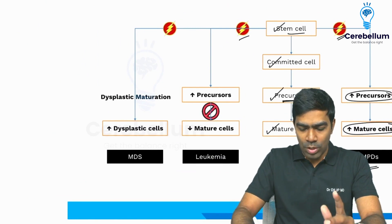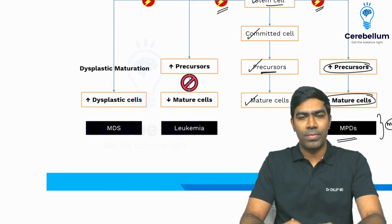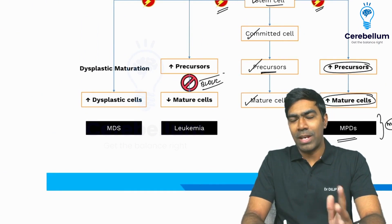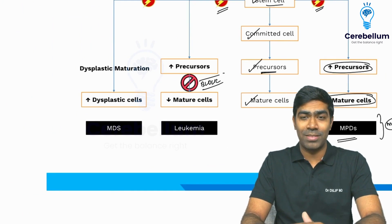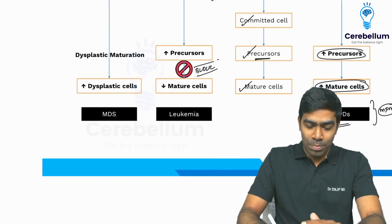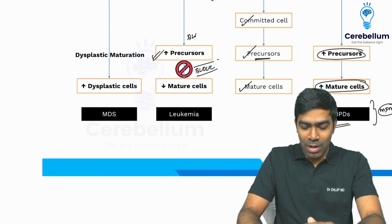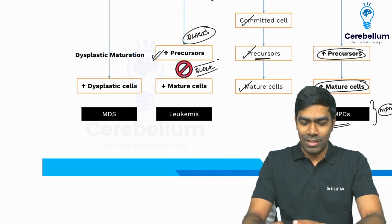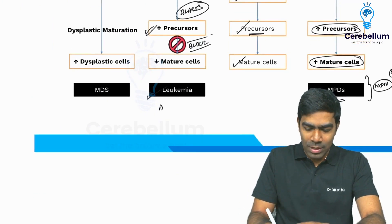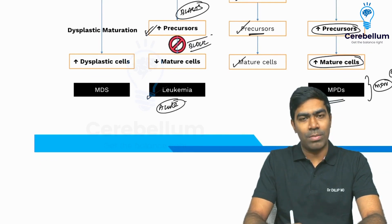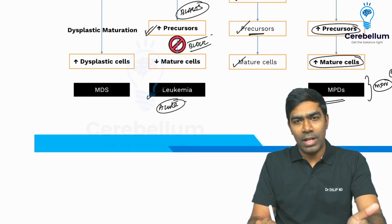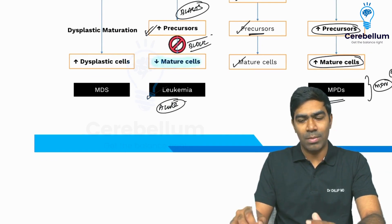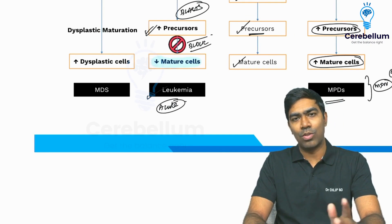On the other hand, if there is a problem in the stem cell — like a mutation or cytogenetic abnormality — that results in a block of differentiation, the main problem is the block in differentiation, so precursor cells and the so-called blasts accumulate. We call that leukemia — typically an acute leukemia. Because of the block in differentiation, you will have a reduced number of mature cells, which means there will definitely be cytopenia.